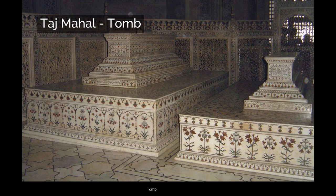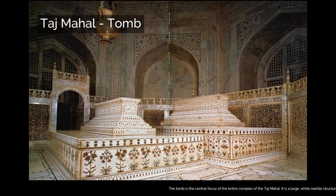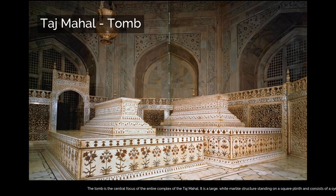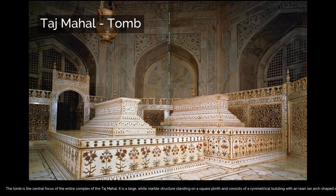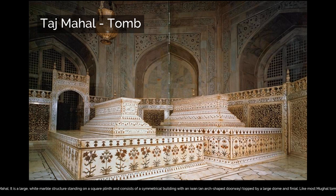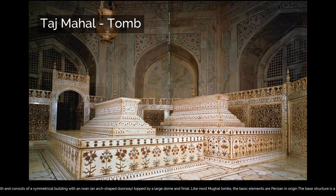The tomb is the central focus of the entire Taj Mahal complex. It is a large white marble structure standing on a square plinth, consisting of a symmetrical building with an iwan — an arch-shaped doorway — topped by a large dome and finial. Like most Mughal tombs, the basic elements are Persian in origin.